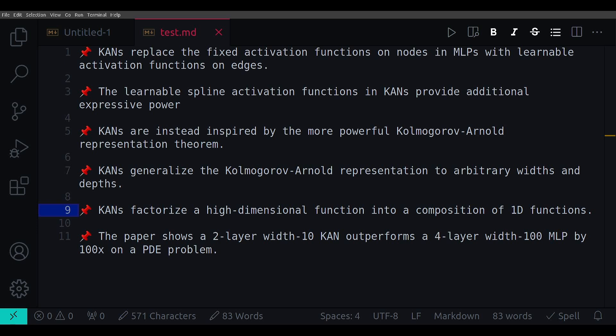Here are a few points about this claim that why embeddings from CANs can be more expressive. CAN replaces the fixed activation functions on nodes in regular MLPs with learnable activation functions on edges, which you already pointed out. These learnable spline activation functions in CANs provide additional expressive power compared to fixed activations like ReLU or Tanh in MLPs. Splines can accurately fit complex one-dimensional functions.